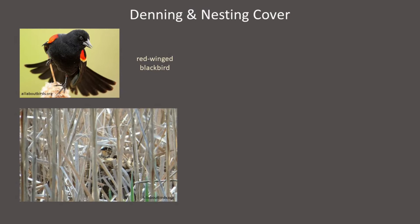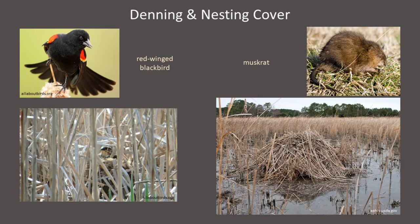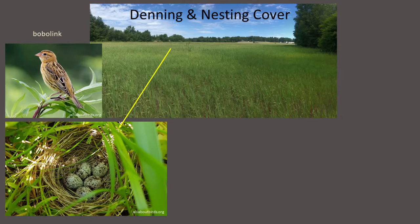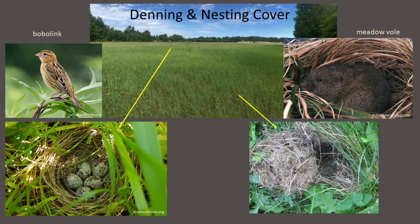Wildlife that require marshes as their primary habitat often conceal their nest within the tall cover provided by dense emergent vegetation such as cattails. Species such as muskrats and beavers construct their own denning cover — here we can see a muskrat lodge characteristically constructed out of cattail stalks. Birds that require field habitats for nesting usually make their nests directly on the ground in the cover of tall grasses near the middle of a field. Small mammals and snakes associated with fields usually nest within the litter layer — the dead vegetation or thatch covering the ground under the taller live grasses.